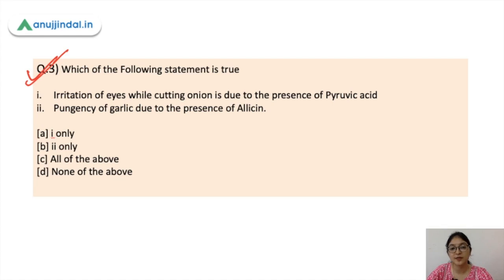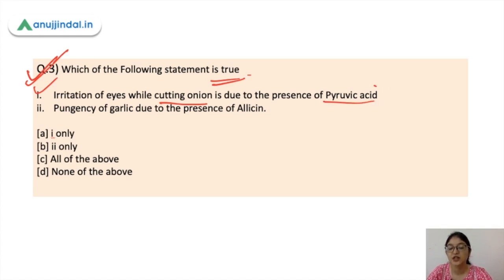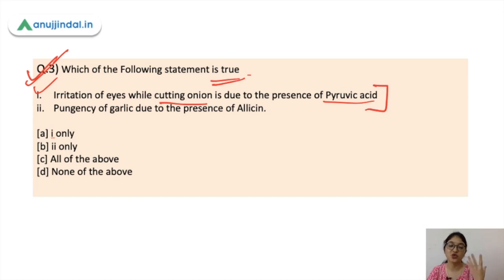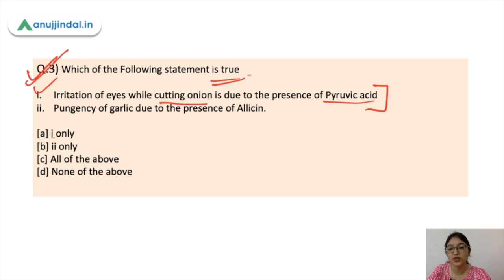Moving forward to question three: which of the following statement is true? The first statement is: irritation of eyes while cutting onion is due to the presence of pyruvic acid. So when you cut onion, your eyes water and there is irritation — this is because of the presence of pyruvic acid. This statement is correct.